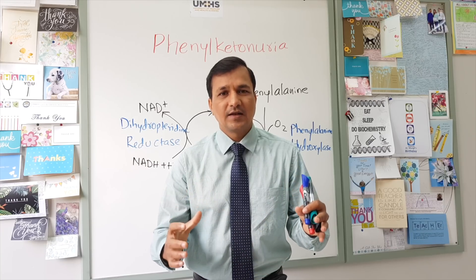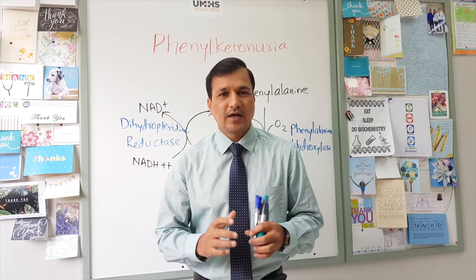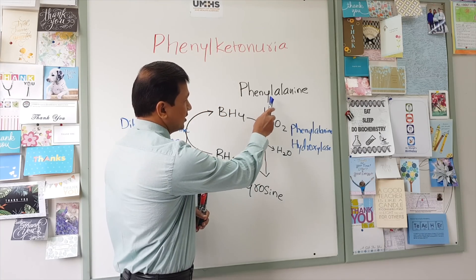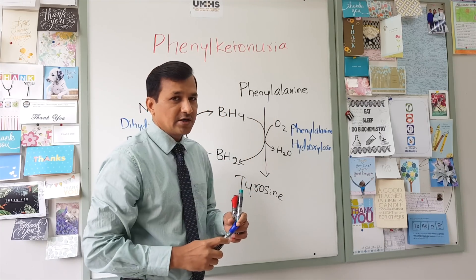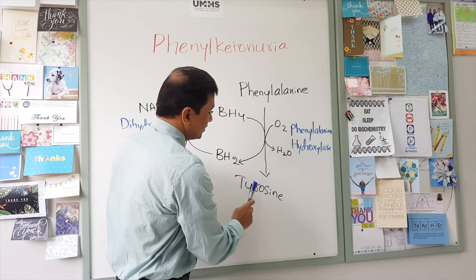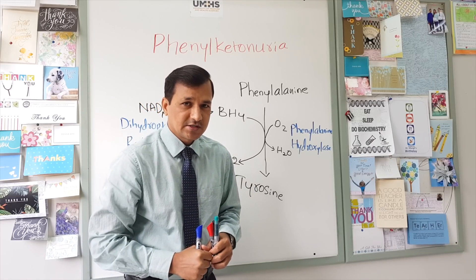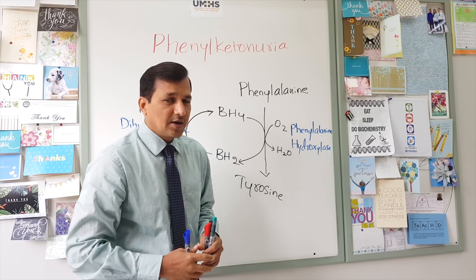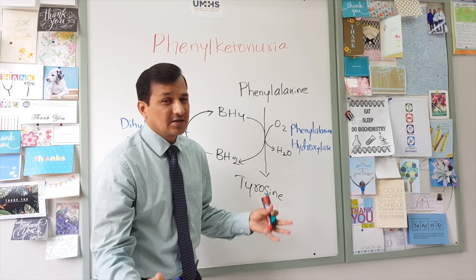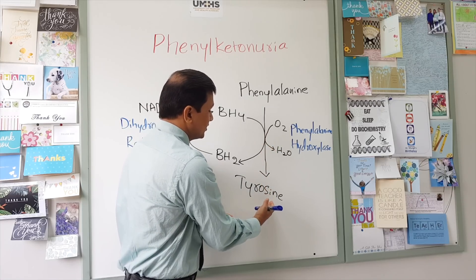The phenylalanine hydroxylase enzyme converts phenylalanine — an essential aromatic amino acid — into tyrosine, which is a non-essential aromatic amino acid. Basically, phenylalanine undergoes a hydroxylation process where a hydroxyl group is added to phenylalanine, and that converts it into tyrosine.